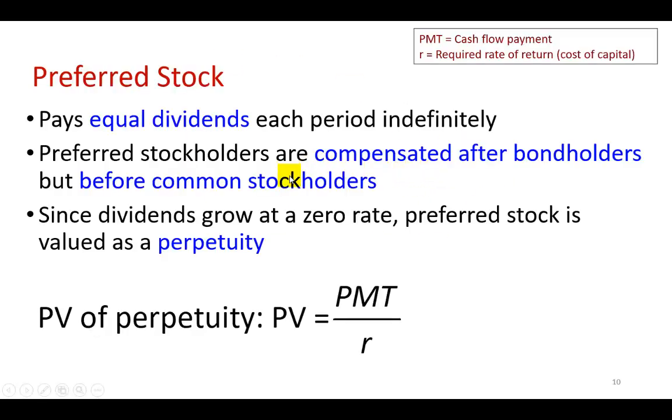I begin here by laying out some of the basic characteristics of a preferred stock, which include the fact that it pays equal dividends indefinitely. And so this qualifies it to be referred to as a perpetuity.